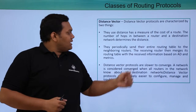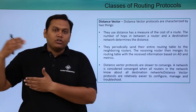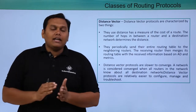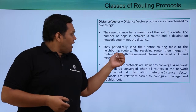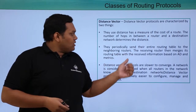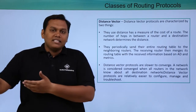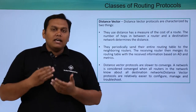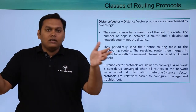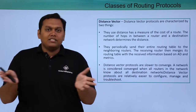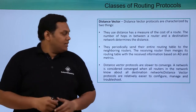Distance vector protocols periodically send the entire routing table to neighboring routers, and the receiving router gets information about all routes and the distances between them.